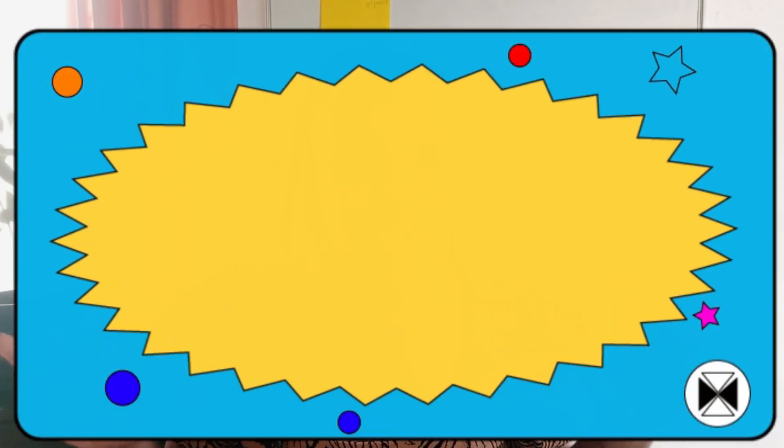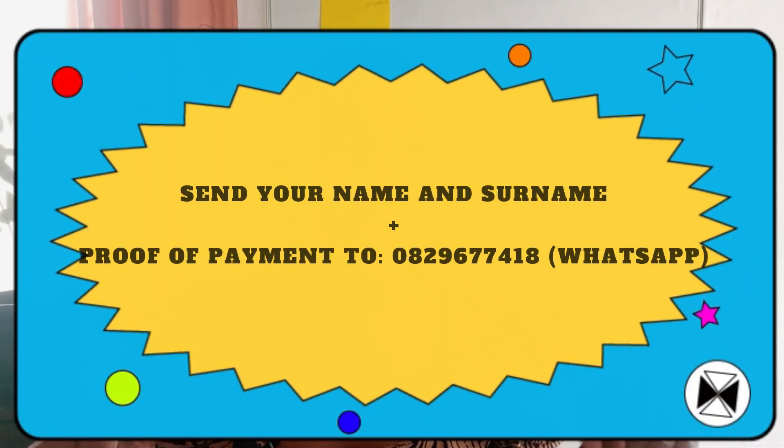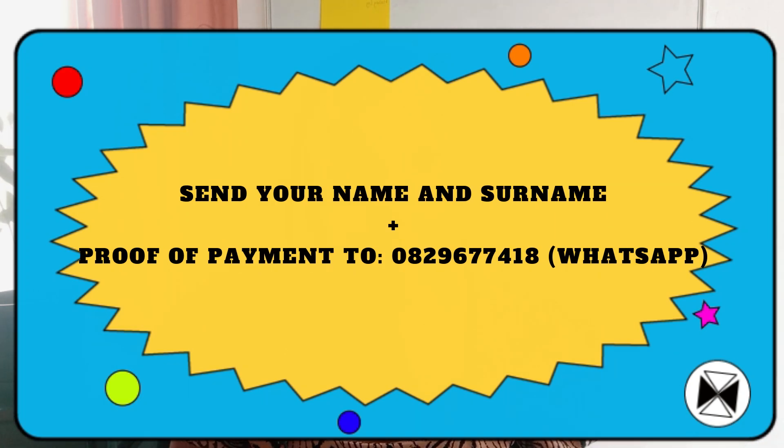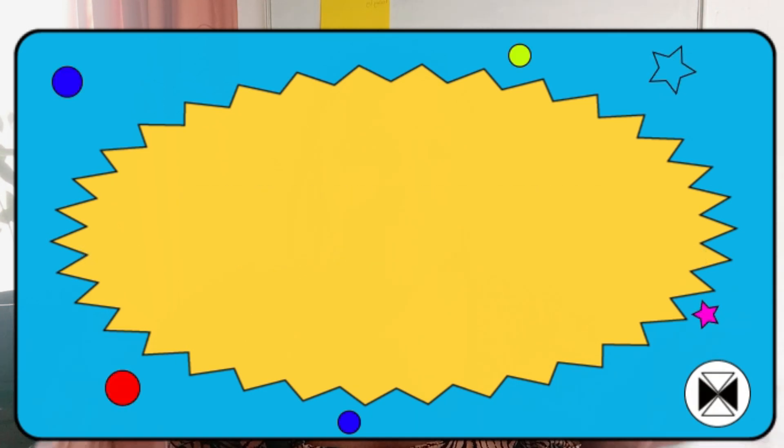I'm also going to put a banner here showing you guys the number to send your proof of payment to. Send your proof of payment to that number. Once you've sent me the proof of payment, I'm going to add you guys to a group — the Grade 12 Maths Lit Online Group Lessons Group — and that is where I'm going to update you guys and give you guys the link to use every Thursday and Saturday to log into these meetings.